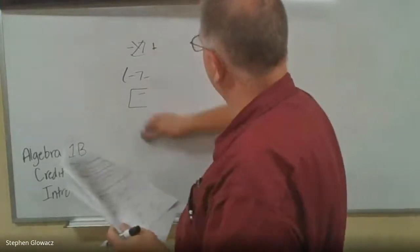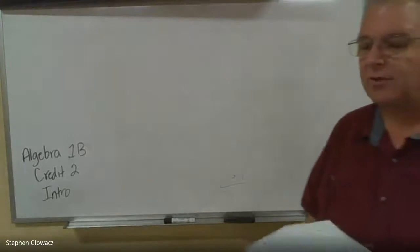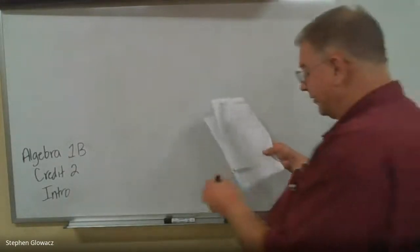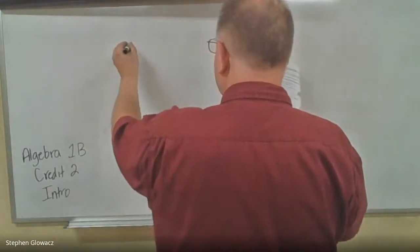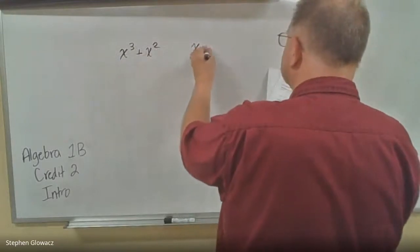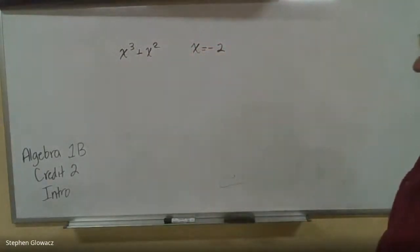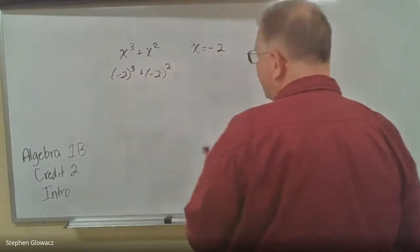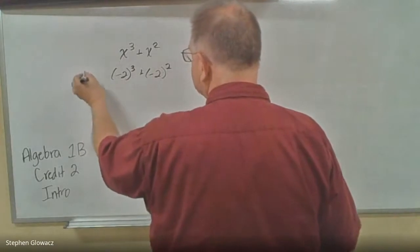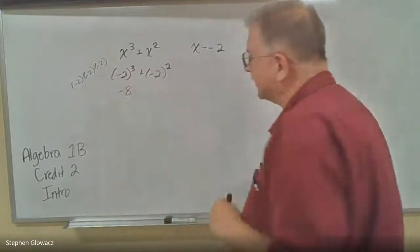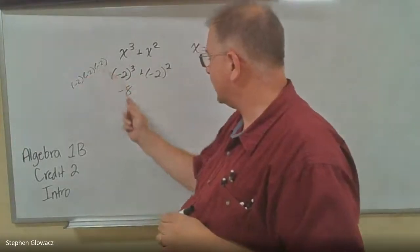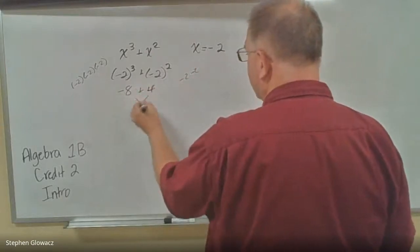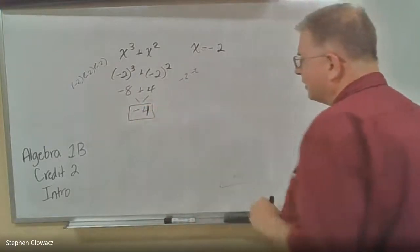Now at the bottom of the page, we're going to get into evaluating expressions. So if some of this is a little fuzzy, it's going to help when we get into the packet. Number 8, we have X to the third plus X squared, and we were told that X is equal to negative 2. So we're going to plug in negative 2 for X. Negative 2 to the third power means negative 2 times negative 2 times negative 2, which is negative 8. Negative 2 squared means two of them, negative 2 times negative 2 is positive 4. And then negative 8 plus 4, you can verify that on the calculator, is negative 4.